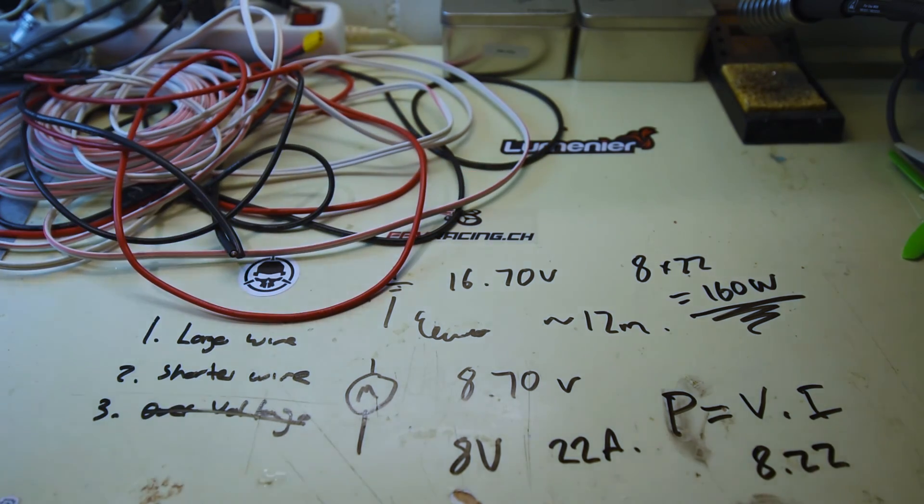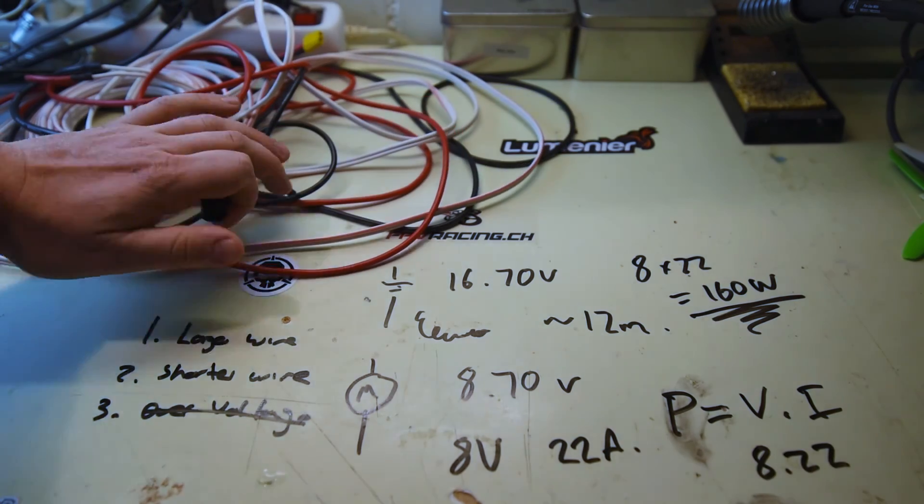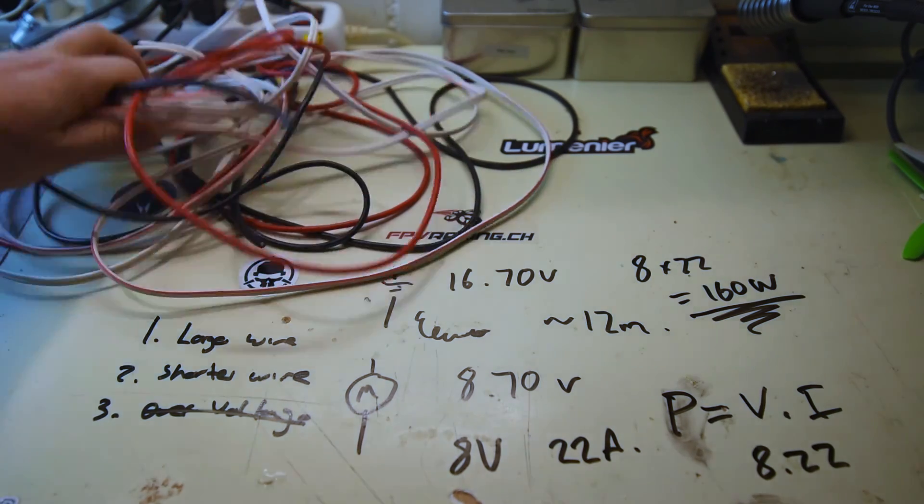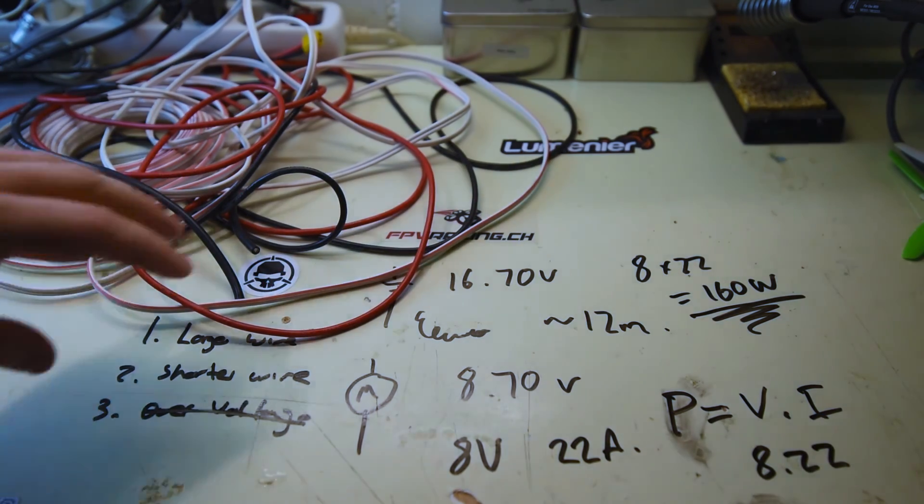This is why the superconductor would be the holy grail. Imagine you could just get tiny little strands of wire and fly something as high as you wanted, as far as you wanted, and you could just connect it up to the batteries at the bottom.